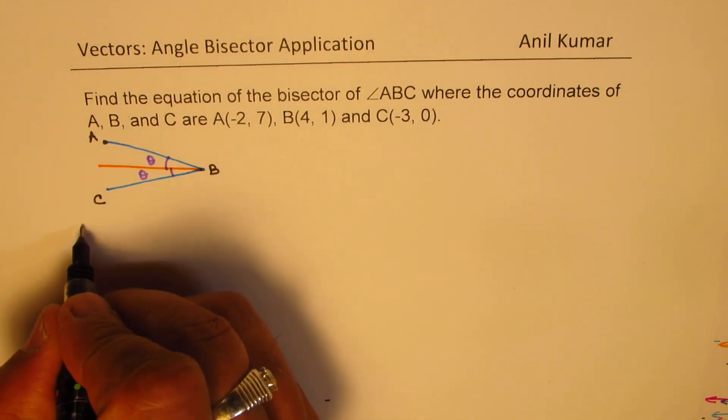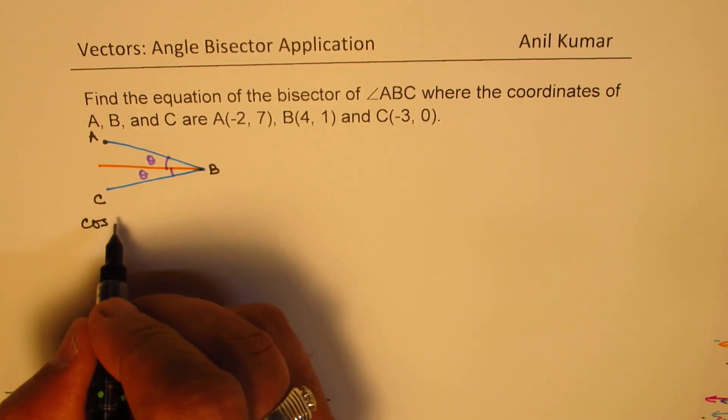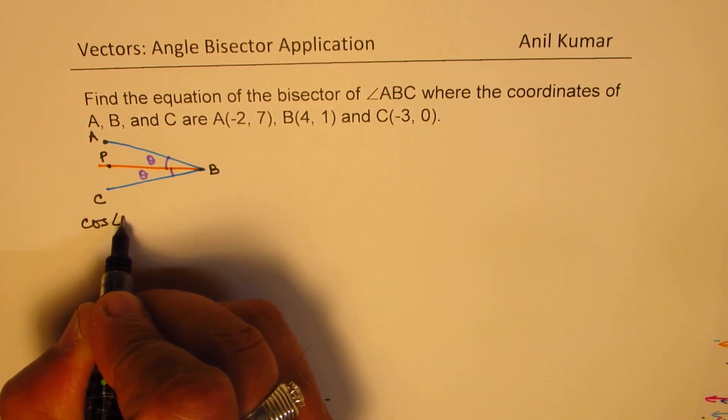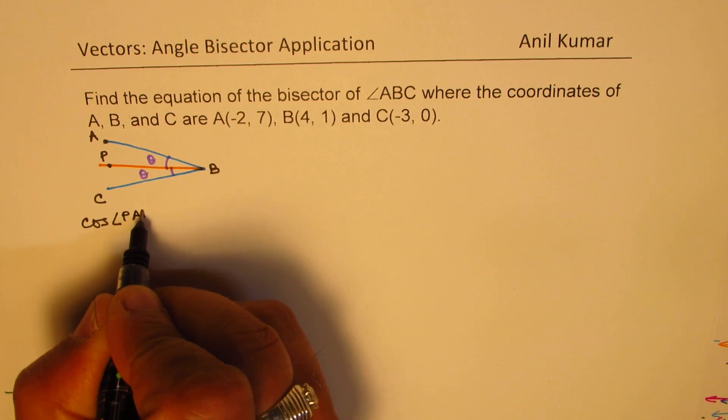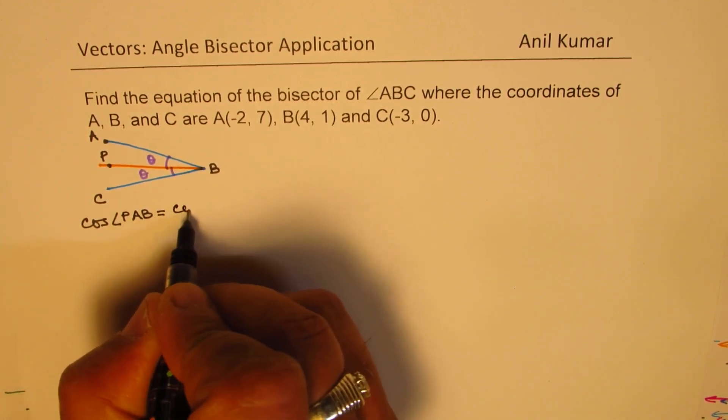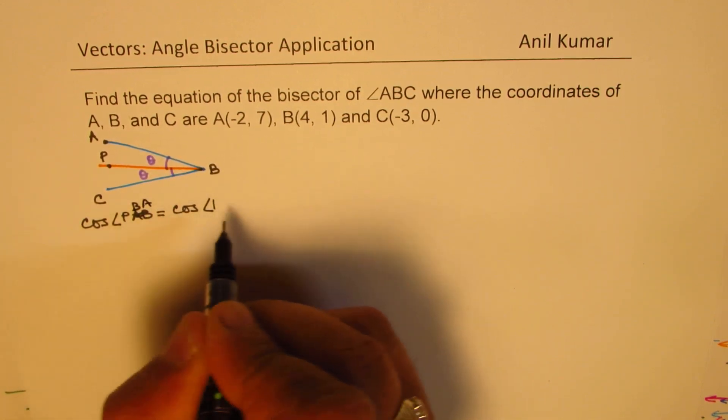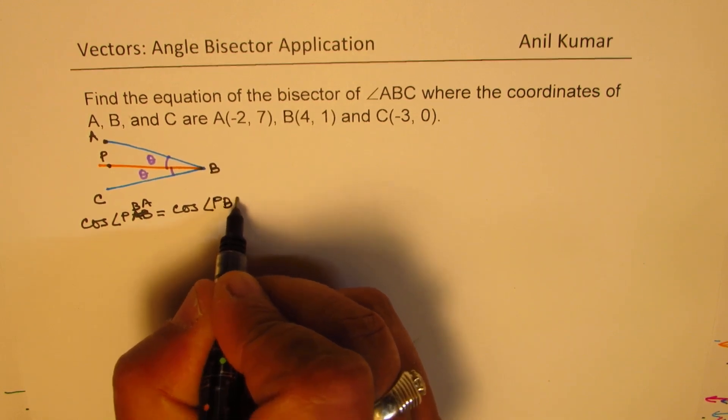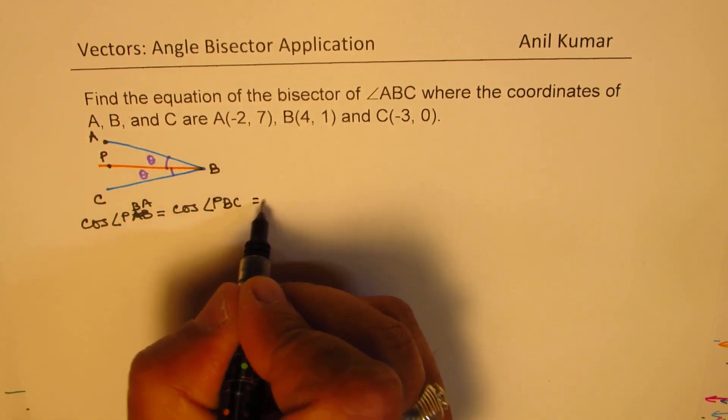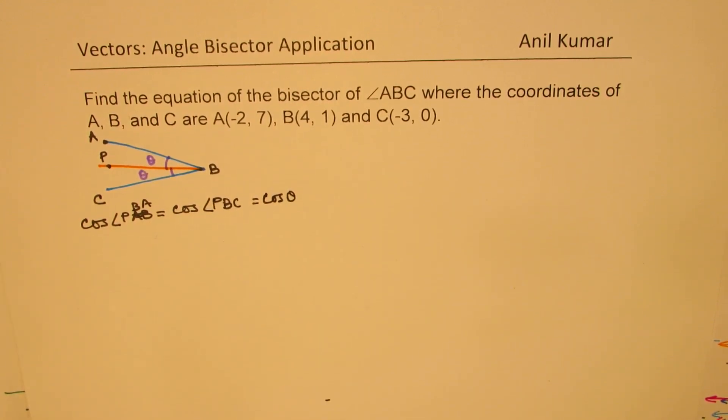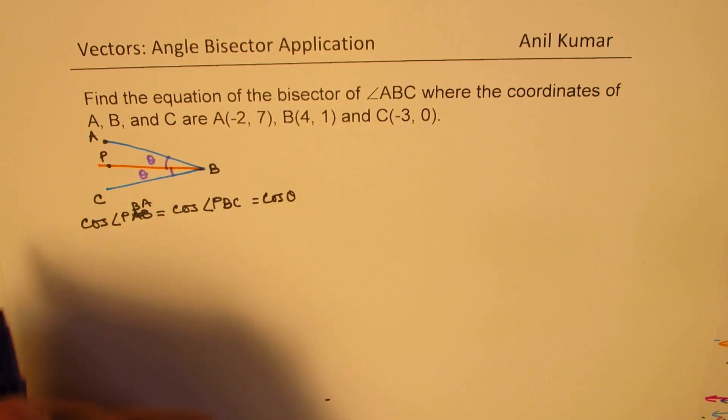So, technically, we have cos of, let's take a point P here. So, cos of angle PBA should be equal to cos of angle PBC, which is equal to cos of theta. Now, cos of these angles can be found using dot product.